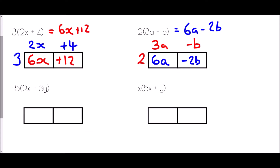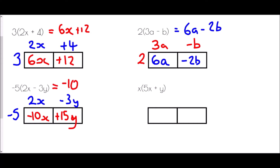Next we have negative 5 being multiplied by 2x - 3y. I write -5 at the front, 2x and -3y at the top. Negative 5 times 2x gives -10x. Negative 5 times negative 3 gives a positive, so +15y. Solution: -10x + 15y.